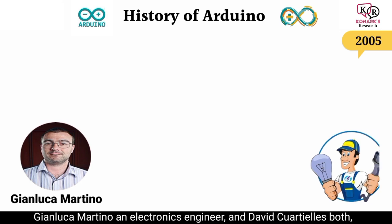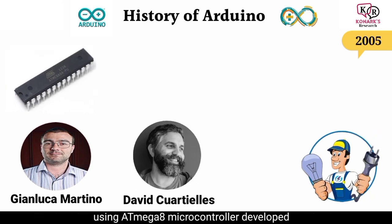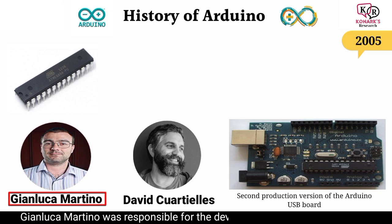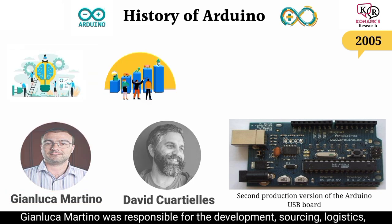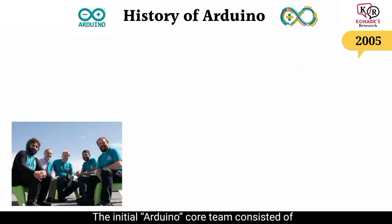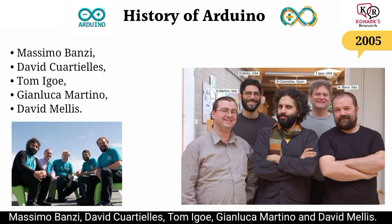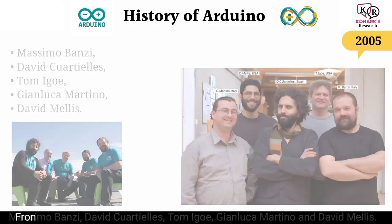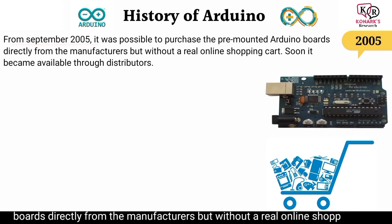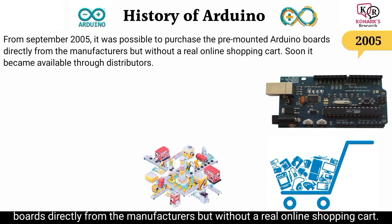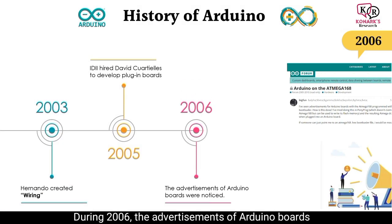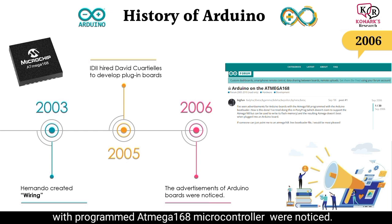The bar was named after Arduino of Ivrea, who was the Margrave of the March of Ivrea and King of Italy from 1002 to 1014. Gianluca Martino, an electronics engineer, and David Cuartielles both developed the second production version of the Arduino USB board using the ATmega8 microcontroller. Gianluca Martino was responsible for development, sourcing, logistics, production, quality, and marketing of Arduino boards globally. The initial Arduino core team consisted of Massimo Banzi, David Cuartielles, Tom Igoe, Gianluca Martino, and David Mellis.